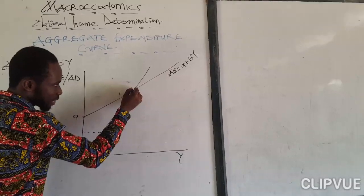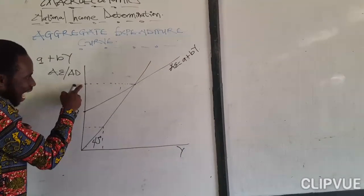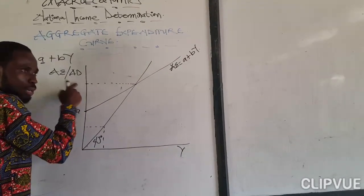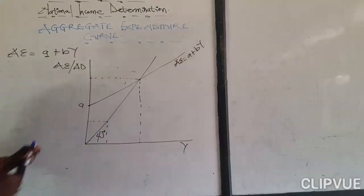Now it cuts the 45 degrees line here. So when you trace it to here, it is equilibrium national income. Equilibrium national income.